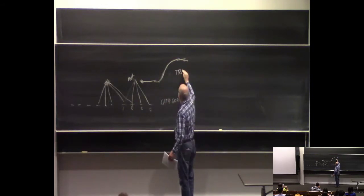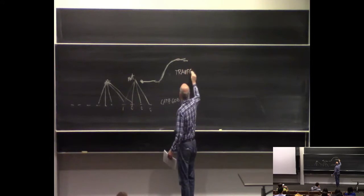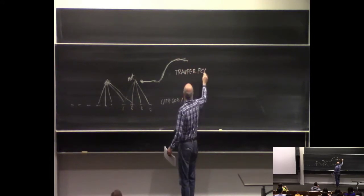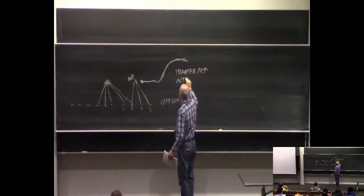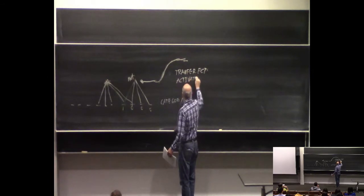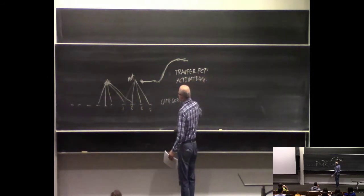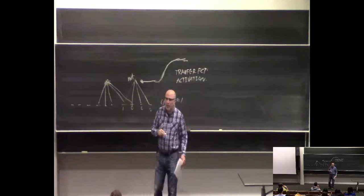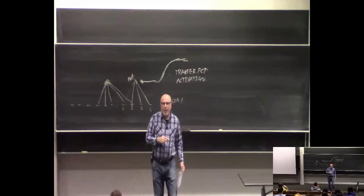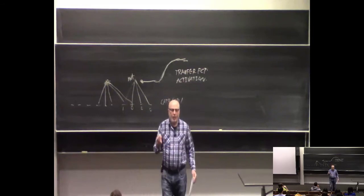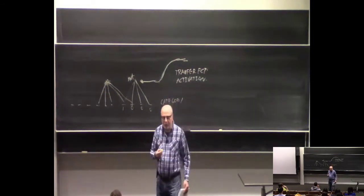So the general rule of thumb is you want the total net input that goes into any hidden unit to be in the interesting section of your transfer function, or activation function — it's the same thing.